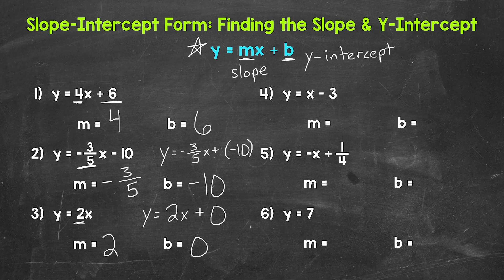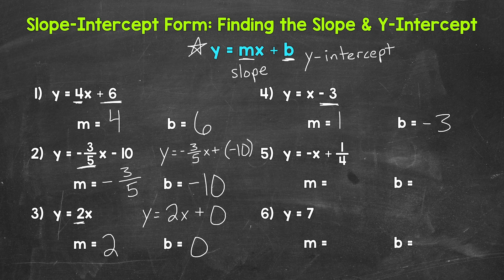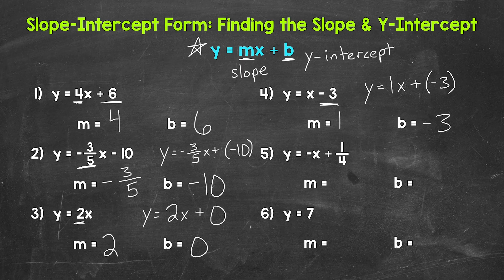Moving on to number four, we have y equals x minus 3. For our slope, we just have an x. Remember, whenever we just have an x, there is an implied 1 in front, so our slope is 1. We can think of this as y equals 1x minus 3, and then our y-intercept is negative 3. It can be helpful to rewrite this as y equals 1x plus negative 3, writing in that 1 in front of the x. Either equation will work, so use what works best for you.